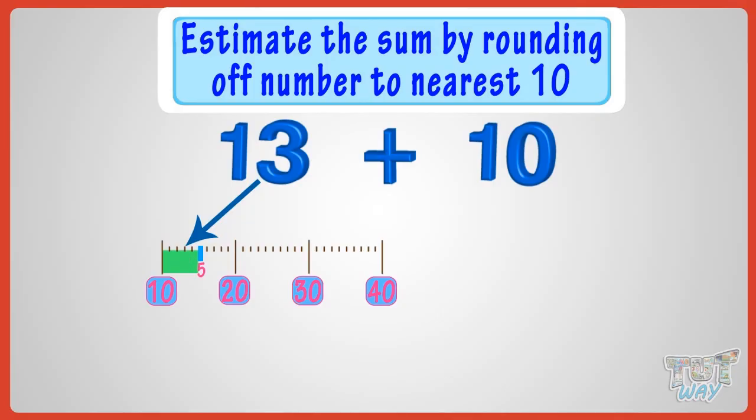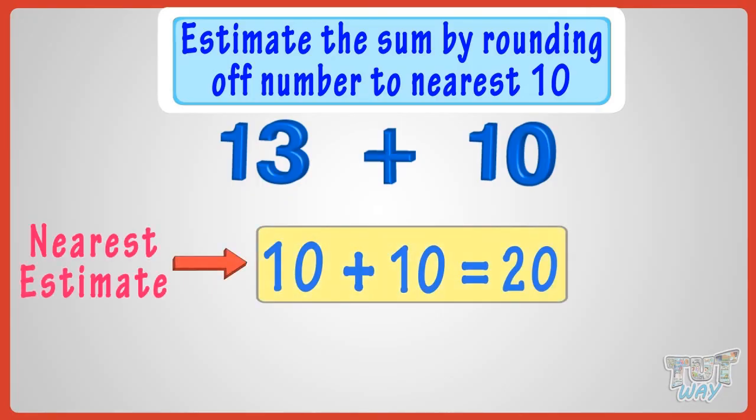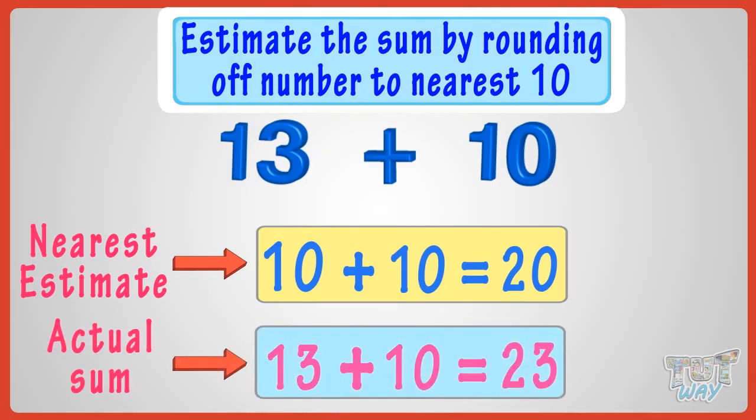Now, add the rounded off figures to calculate the estimate. 10 plus 10 equals 20. So the nearest estimate of 13 plus 10 is 20. Now, compare the estimate with the actual sum. Actual sum is 13 plus 10 equals 23. Yeah! Our estimate is very near.